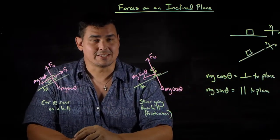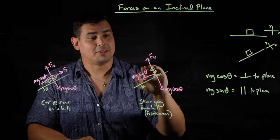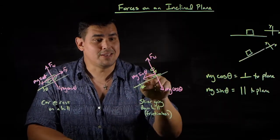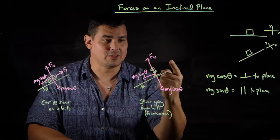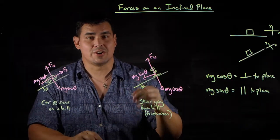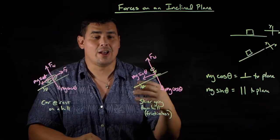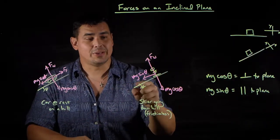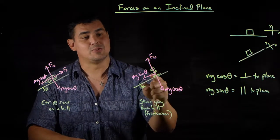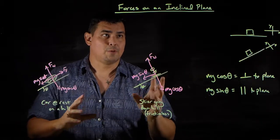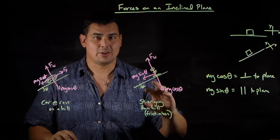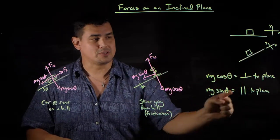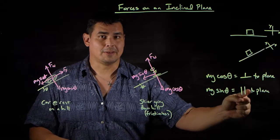For the skier, the perpendicular forces cancel out, but there's nothing to cancel the x-component of gravity. That uncanceled mg sine theta is what causes the skier to accelerate down the ramp — there's no applied force needed, it's just gravity split into components. So when you see an inclined plane, automatically think: tilt your xy coordinate system, then break gravity into mg cosine theta perpendicular to the plane and mg sine theta parallel to the plane.